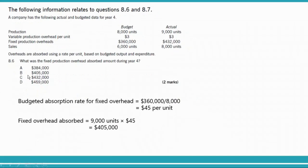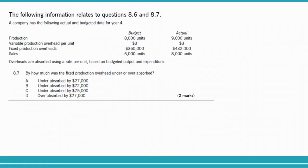The absorbed overhead is $405,000, so the answer is option B. This represents the overheads added into production. Now for question 8.7 using the same data: by how much was the fixed production overhead under or over absorbed? Under/over absorbed is the difference between actual overheads and absorbed overheads.